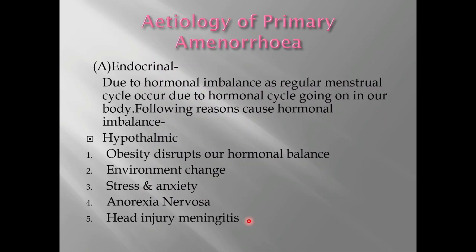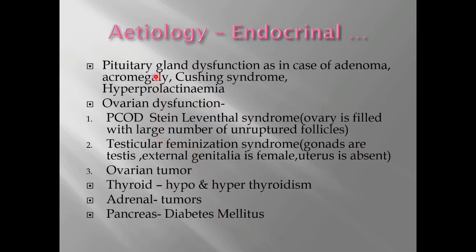Now let's see the etiology of primary amenorrhea. The first cause is endocrinal. At the hypothalamic level, causes include obesity, which can disrupt hormonal balance, then environmental change, stress and anxiety, anorexia nervosa, and head injury or meningitis. At the pituitary gland level, problems such as adenoma, acromegaly, Cushing's syndrome, and hyperprolactinemia can also cause amenorrhea.